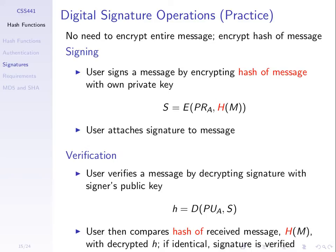When we encrypt the hash, we get a small signature. We send the signature and the message, which is good for performance with not much communication overhead. A 10 gigabyte message concatenated with a 256-bit signature — those 256 bits don't create much communication overhead. The user verifies by decrypting the signature with the signer's public key. You know it came from Steve, so you use Steve's public key to decrypt and you get a hash value, then compare that hash value with the hash of the received message. If they match, everything's okay; if they don't match, we have a problem.